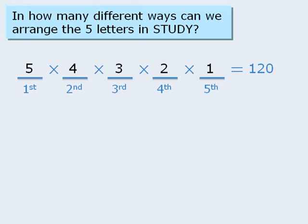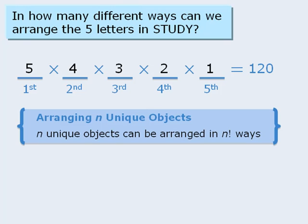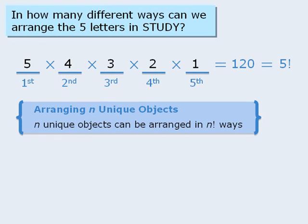Another way to tackle this is to apply the following rule. It tells us that we can arrange n unique objects in n factorial ways. Since there are five unique letters in the word study, we can arrange those letters in five factorial ways.